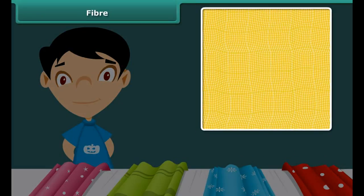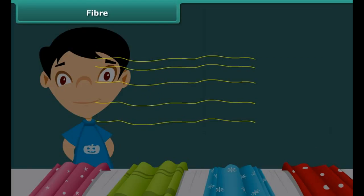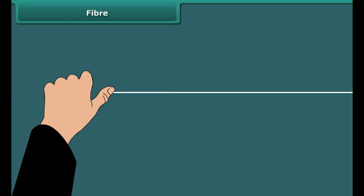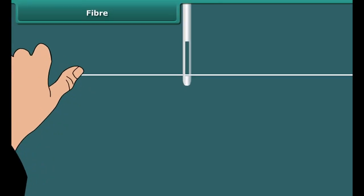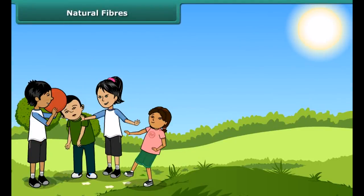Have you ever had a closer look at a fabric? If yes, you must have seen many yarns in it. These thin yarns are made up of still thinner strands called fibers. To understand this, take a piece of fabric. Take out a yarn from it. Now press one end of the yarn with your thumb and scrub the other end along its length with a needle. You can see that the yarn splits into thin strands. These thin strands are fibers.